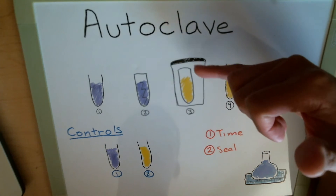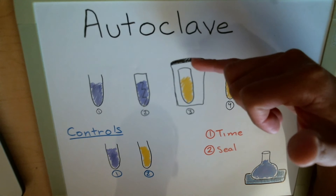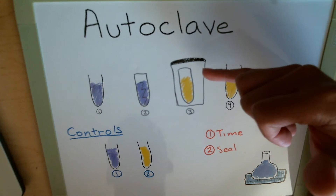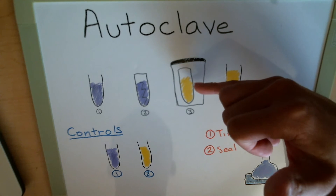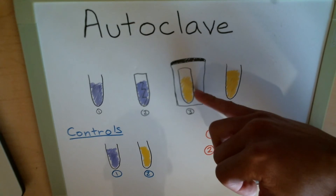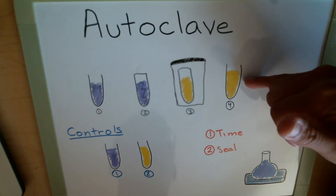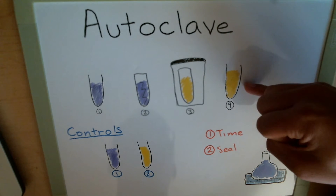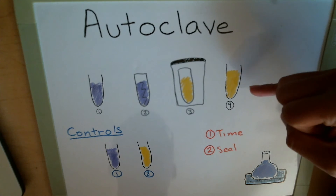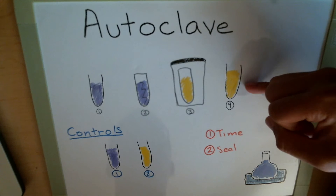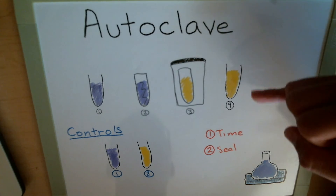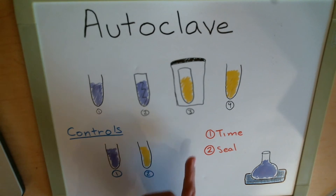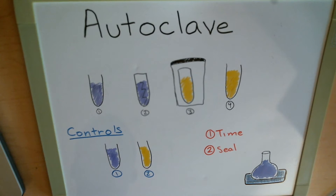In sample three, we have a sealed test tube inside another sealed canister — the steam wasn't able to enter even the first canister, so it can't reach the bacteria, and we do have growth here. Sample four is an interesting case: the tube is unsealed, but it wasn't put in for a long enough time. How does insufficient time result in a positive result? Feel free to shoot me an email on how proper time and sealing play a role in the autoclave.